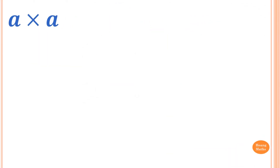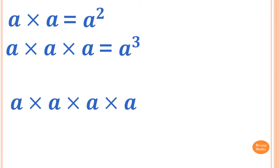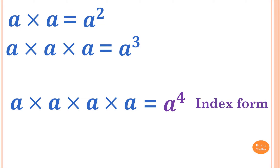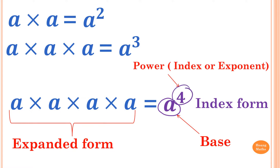A times A is equal to A square. A times A times A is equal to A to the power of 3. A times A times A times A is equal to A to the power of 4. So A to the power of 4 is index form. A times A times A times A we call this expanded form. So for index form, A here is the base, whereas 4 is the power or index or exponent.